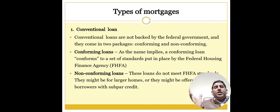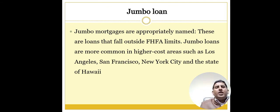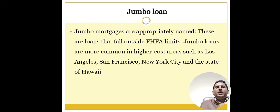There are many types of mortgages. Conventional loans are not backed by the federal government and come in two packages: conforming and non-conforming. A conforming loan conforms to a set of standards put in place by the Federal Housing Finance Agency (FHFA). Non-conforming loans are the opposite. Jumbo loans are also important — these are loans that fall outside FHFA limits and are more common in higher-cost areas such as Los Angeles, San Francisco, New York City, and Hawaii.